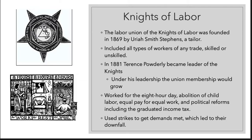In 1881, Terence Powderly became the leader of the Knights of Labor. Under his leadership, 700,000 people — men and women of every race and ethnicity — grew the union membership. What they fought for included the eight-hour workday, elimination of child labor, equal pay for equal work, and political reforms such as a graduated income tax — the more you make, the more taxes you pay; the less you make, the less you pay. The Knights of Labor used strikes to get their demands met, which ultimately led to their downfall.